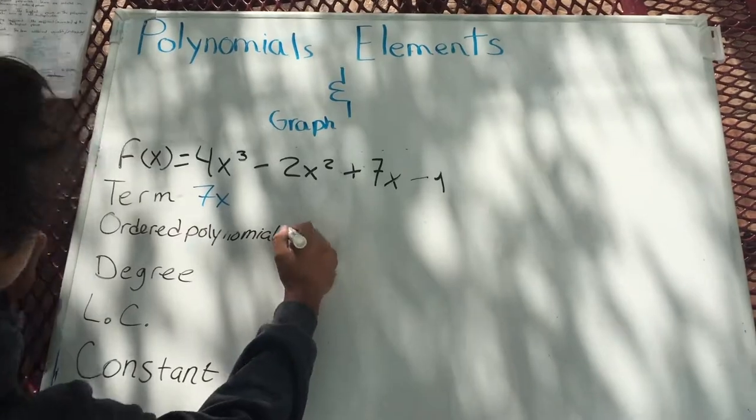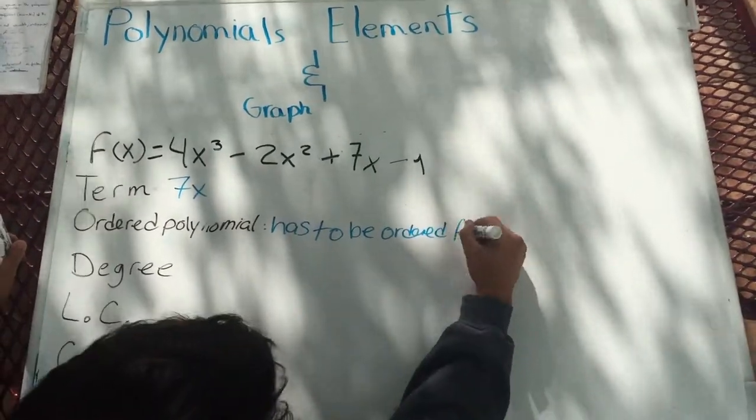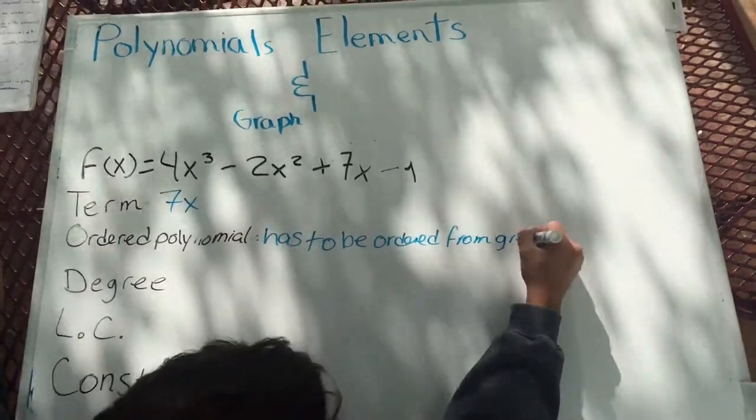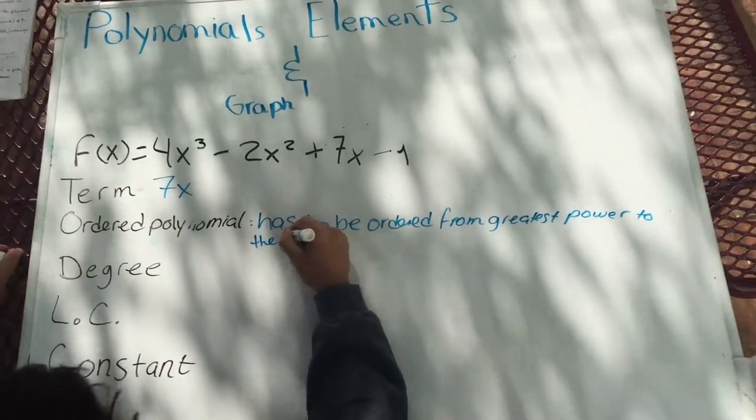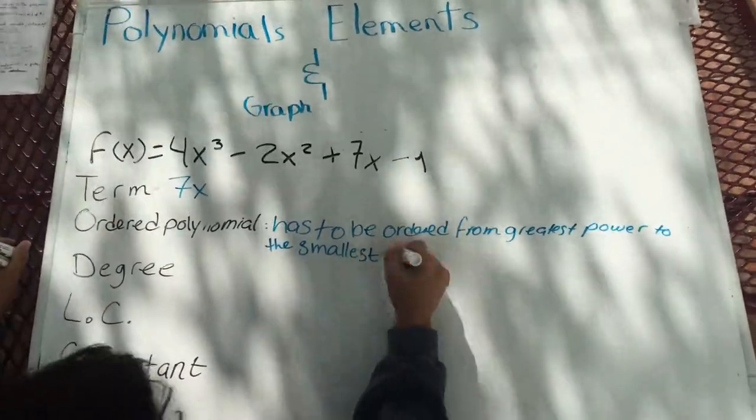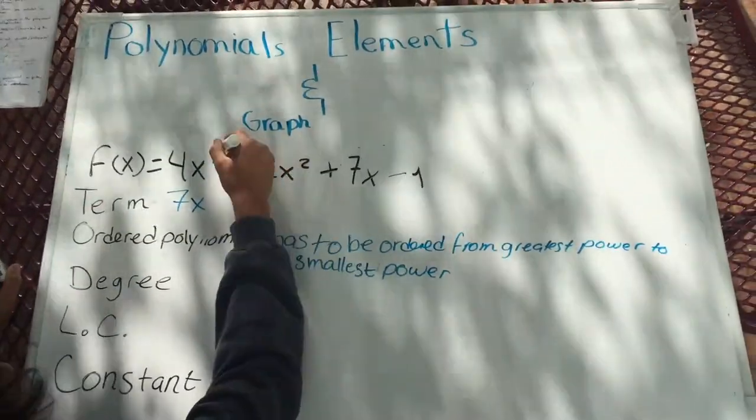Term is an element of a polynomial. An ordered polynomial means that the terms should be ordered from the highest to the lower power. Degree is the highest power in the polynomial.